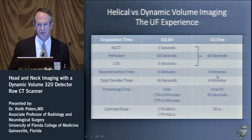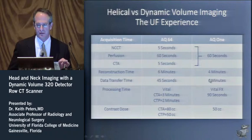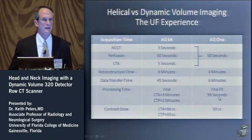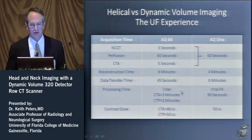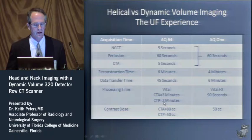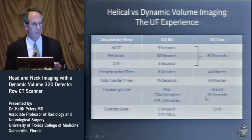The data transfer times show a more significant difference. With our wired system, it takes 6 minutes to transfer the very large volume of data, versus 45 seconds on the 64. But when we get to processing time, we make a lot of that time back. Both are processed on Vital workstations — a standard Vital for the 64 and the Vital FX for the AQ1. CT angio processing on the regular Vital takes about 3 minutes, plus 2 minutes for perfusion across 4 slices. On the FX, it's a one-button push — 90 seconds. So we recover most of the time lost in data transfer.